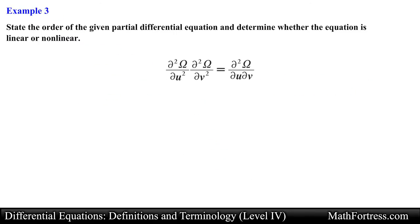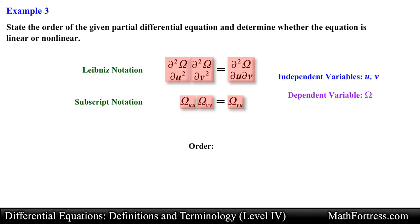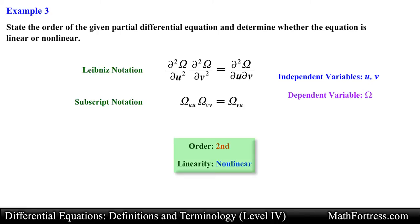Let's try the next example. Here we have another PDE written using Leibniz notation. We can rewrite this PDE using subscript notation. The dependent variable is omega and the independent variables are u and v. For the order, the highest partial derivative in the equation is a second partial derivative, so this PDE is second order. Checking linearity: the partial derivatives are raised to the power of 1. However, on the left side of the equation there is a product of partial derivatives. This automatically makes this PDE non-linear. In the end, this equation is a second order non-linear PDE.